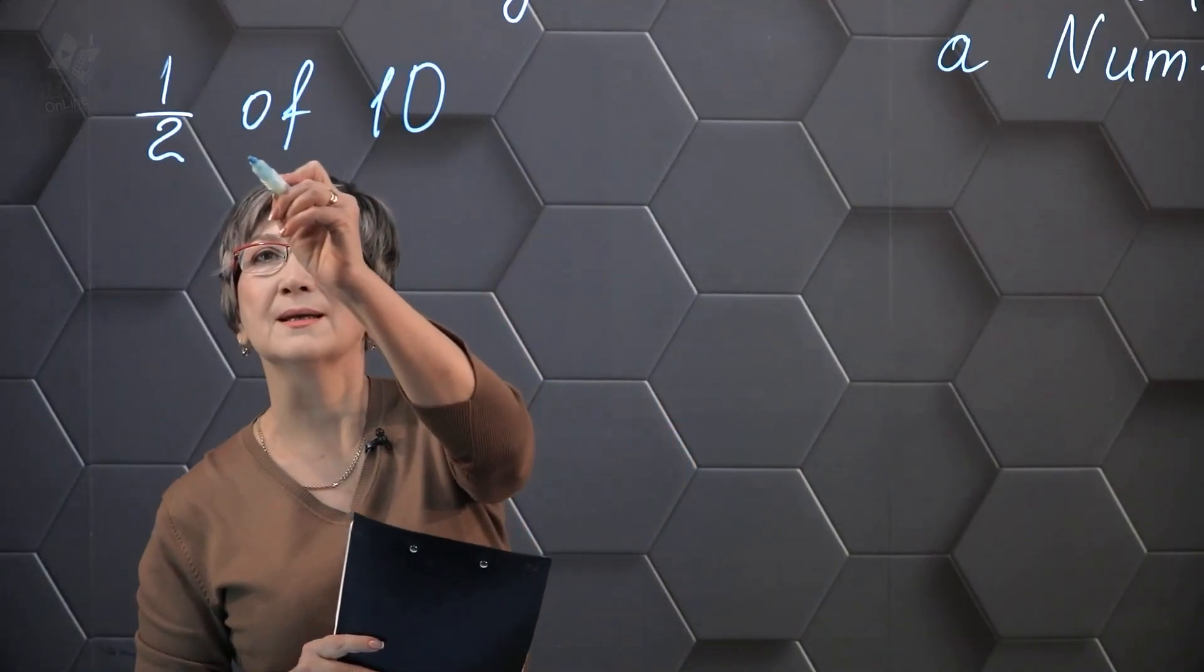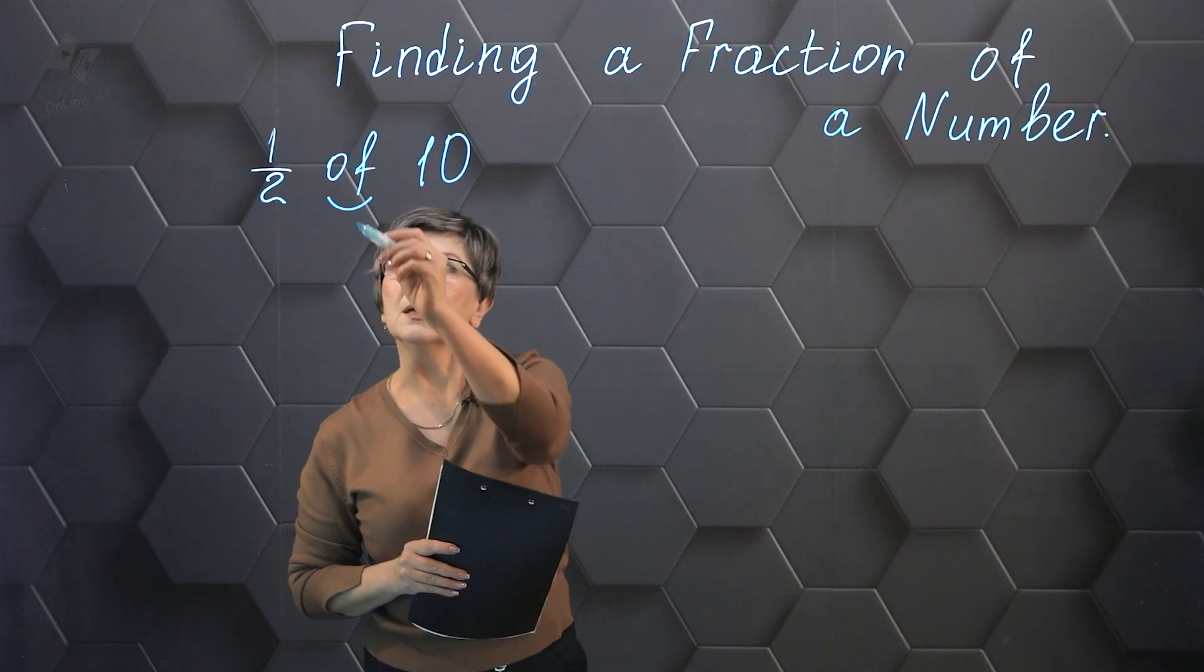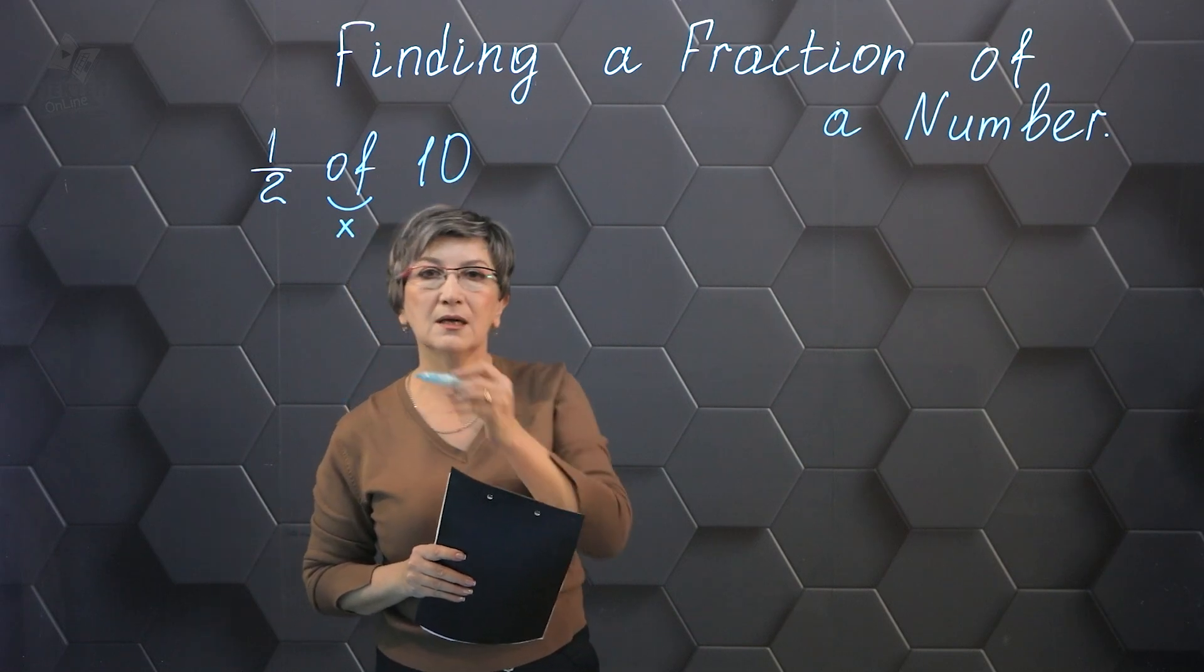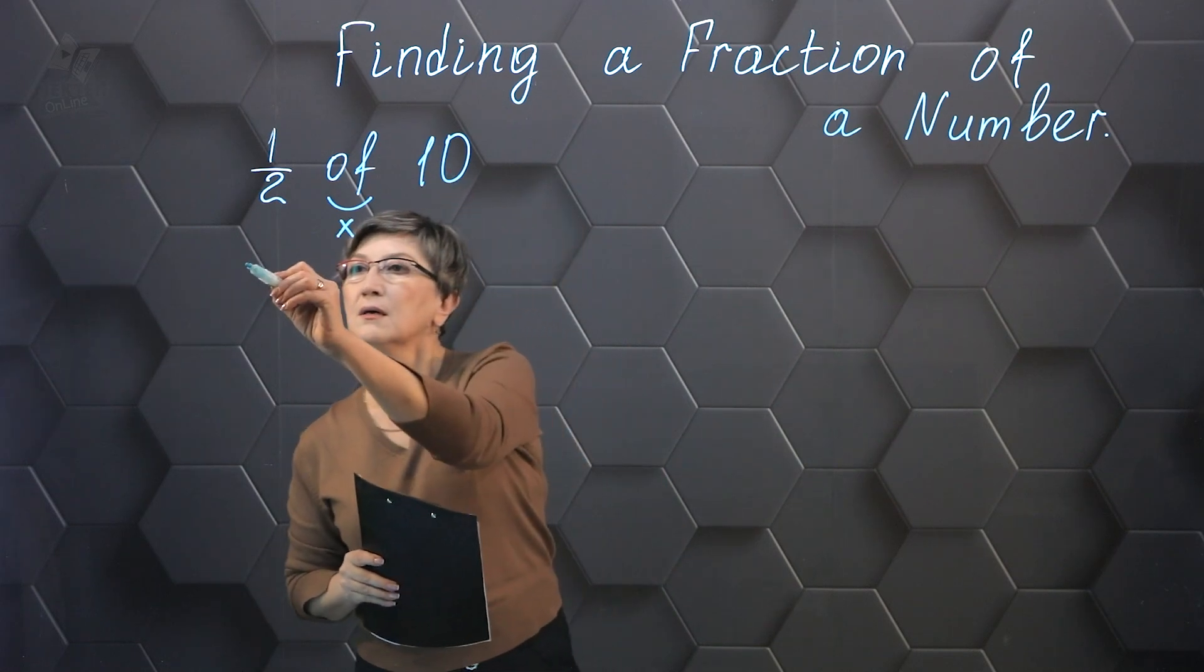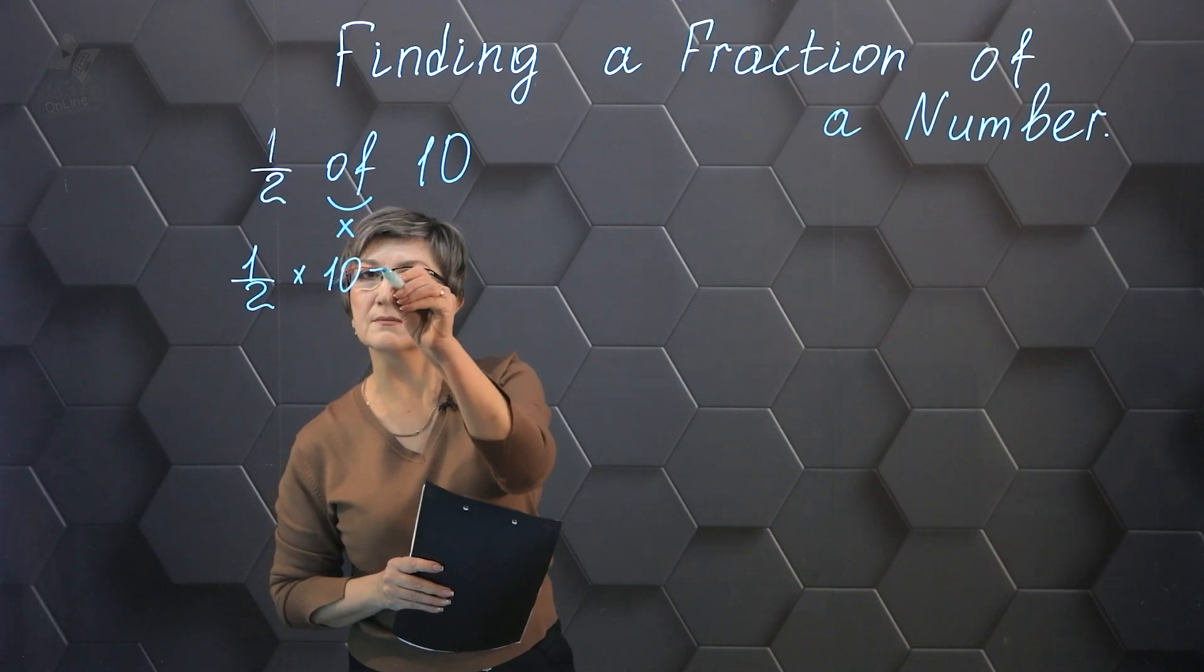What is the procedure to accomplish this task? If we have to calculate a fraction of a given number, we must multiply the fraction by that specific number in order to obtain the desired result. I multiply one-half by 10.